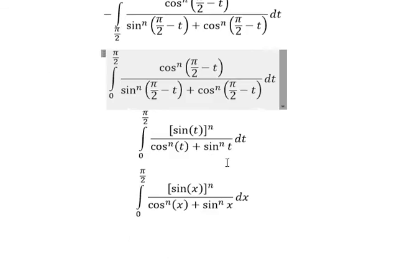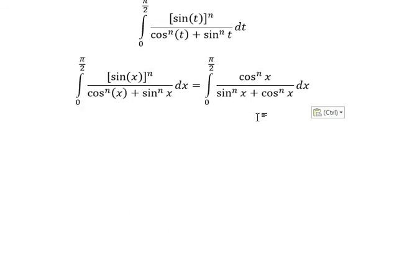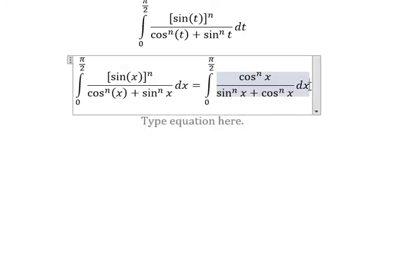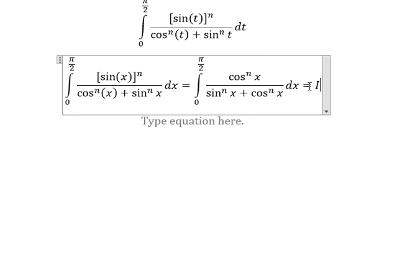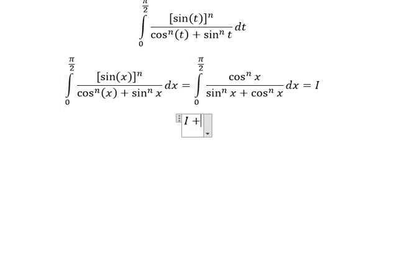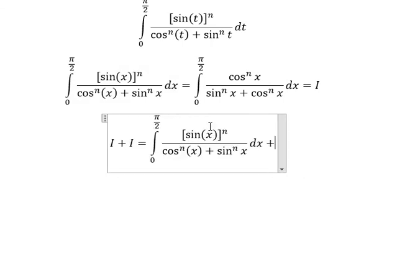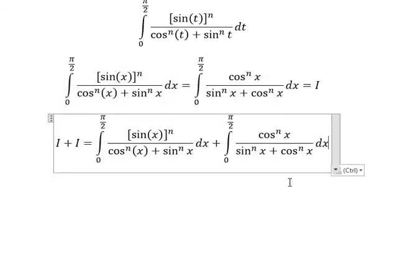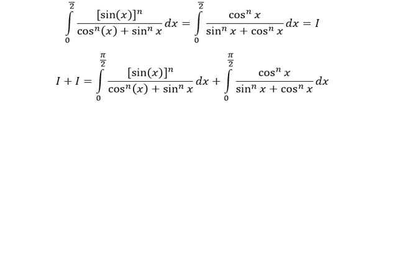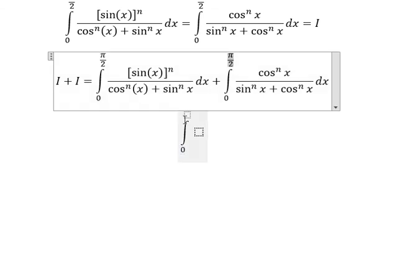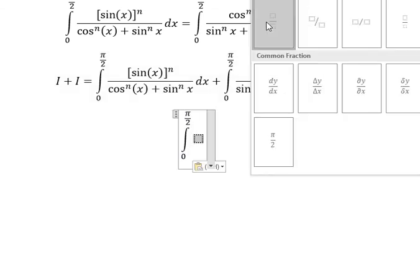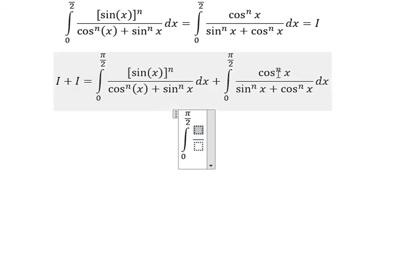Next, this one is equal this one, so we have I. So we put I plus I equal to this one plus this one. And now we got the new integral in here that is from 0 to π/2, and we got this one plus this one.